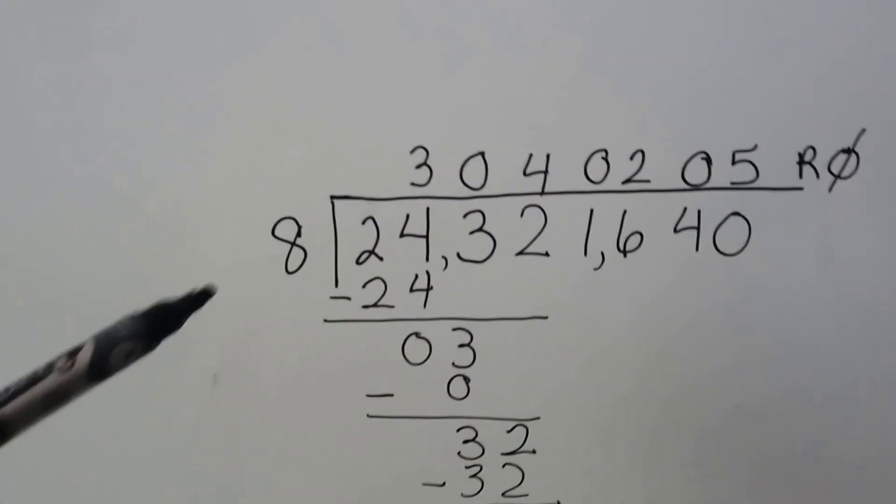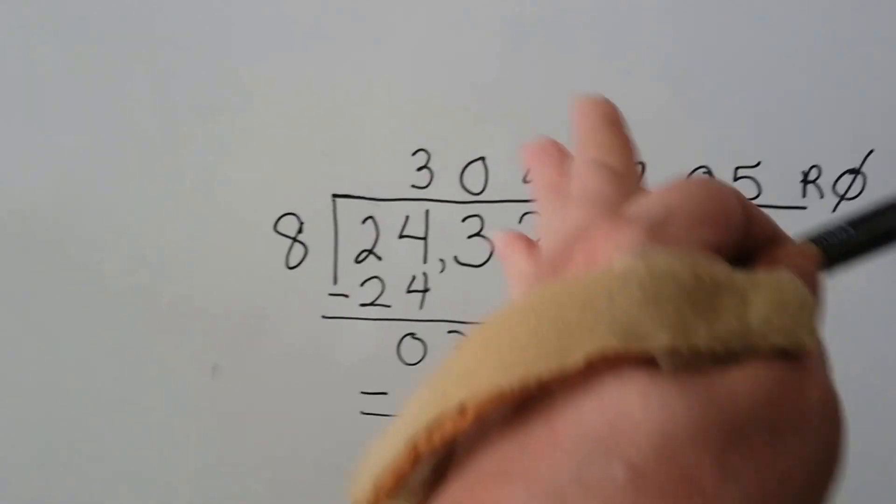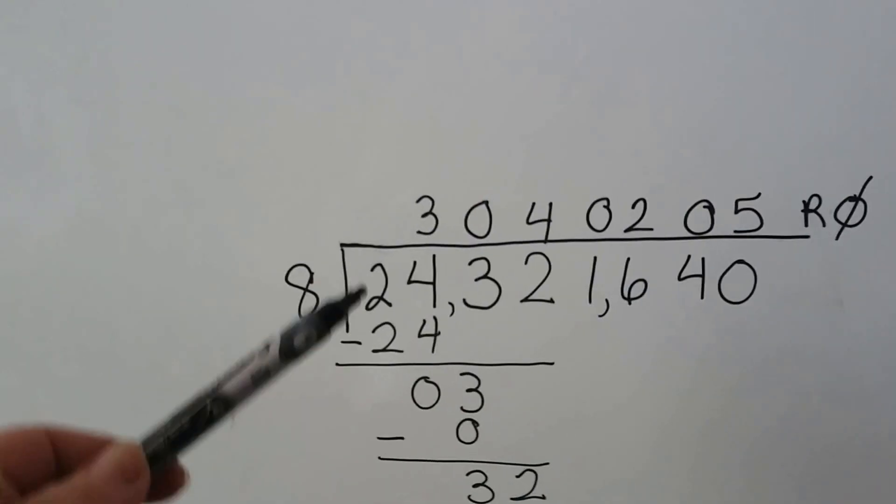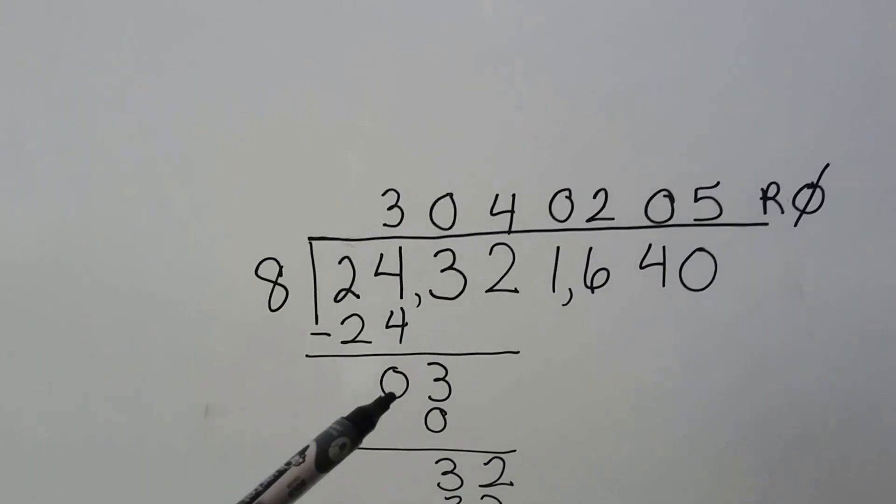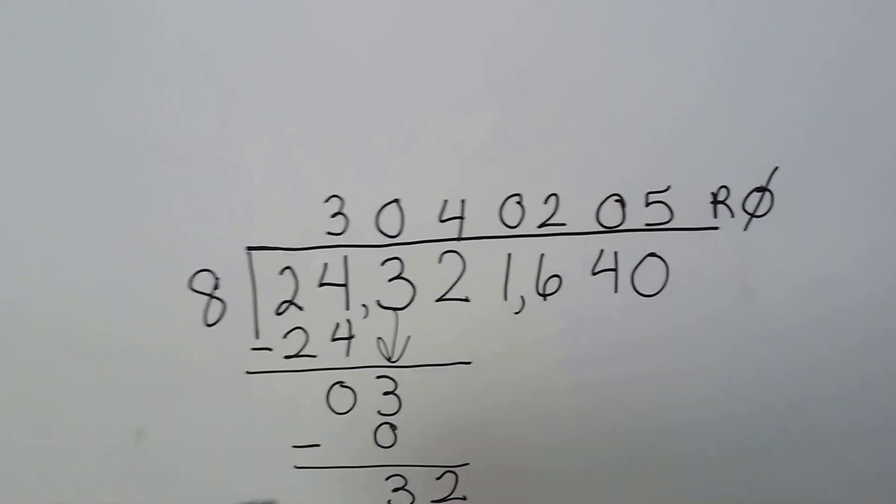We've got this problem. Eight goes into 24. It can't go into two, but it can go into 24 three times evenly. That's going to give us a zero, and now it's the three's turn to come down, isn't it?